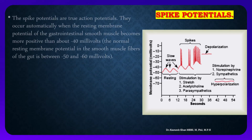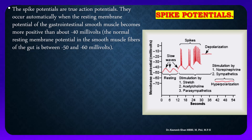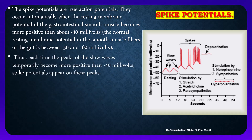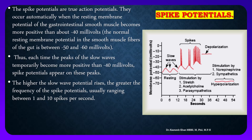Spike potentials are true action potentials that occur automatically when the resting membrane potential of the gastrointestinal smooth muscle becomes more positive than minus 40 millivolts. The normal resting membrane potential in the smooth muscle fiber of the gut is between minus 50 and minus 60 millivolts. Thus, each time the peak of a slow wave temporarily becomes more positive than minus 40 millivolts, spike potentials appear on these peaks.